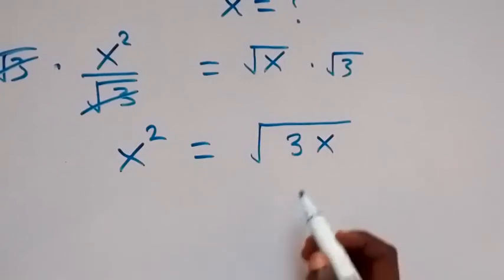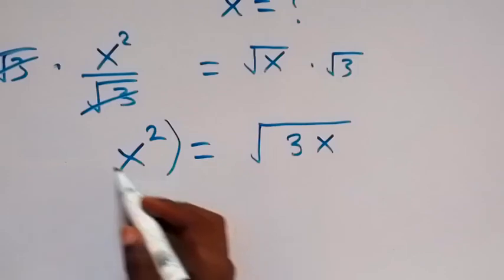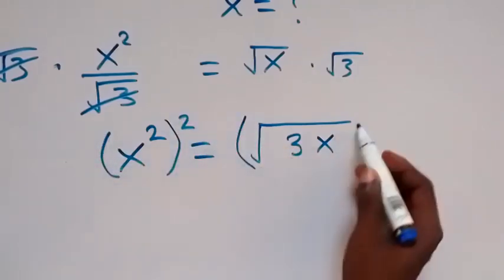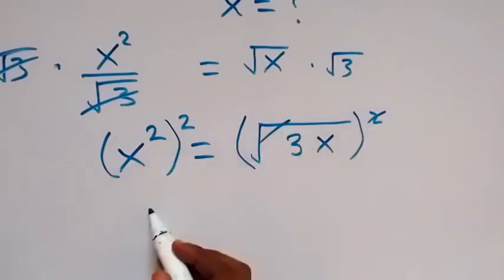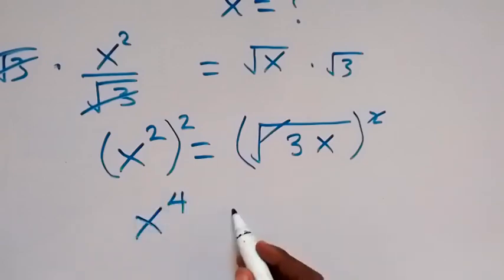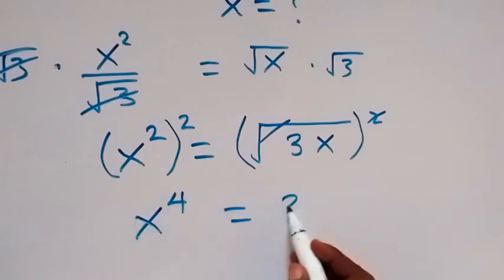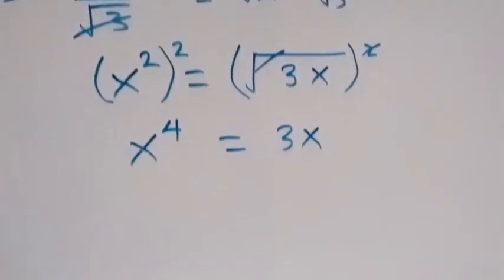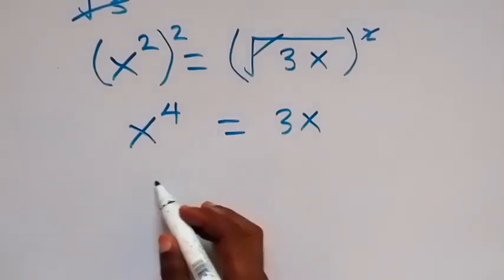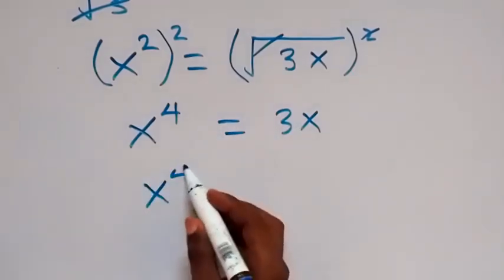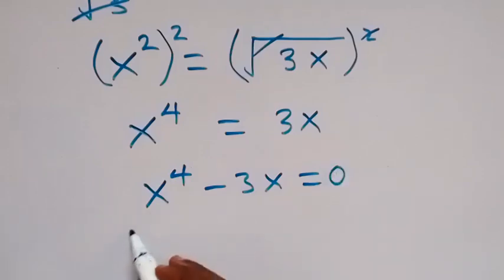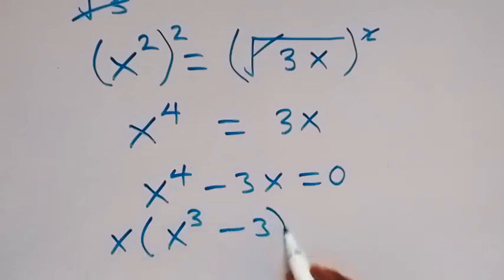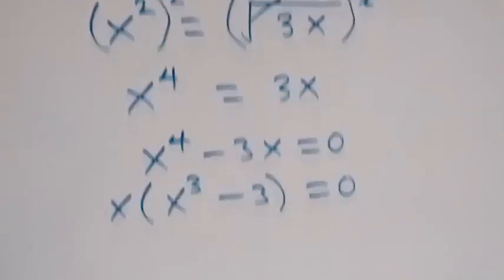In the next step we try to get rid of this square root, and we need to square both sides. The square will cancel the square root, and this power multiplies, giving us x raised to power 4, which equals 3x. Then we bring 3x to this side: x⁴ minus 3x equals 0. We factor x out, leaving x(x³ minus 3) equal to 0.